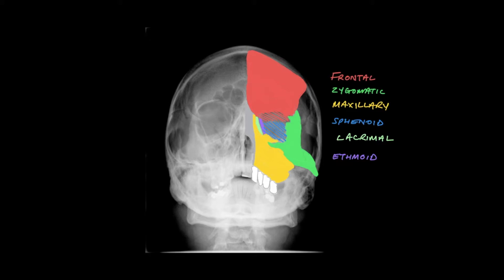A significant component of the orbital roof is supplied by the frontal bone. You can see it shaded in red here. The crisscross annotation is just to allow you to see some of the bone behind it, but the colour contributes towards the rest of the bone.